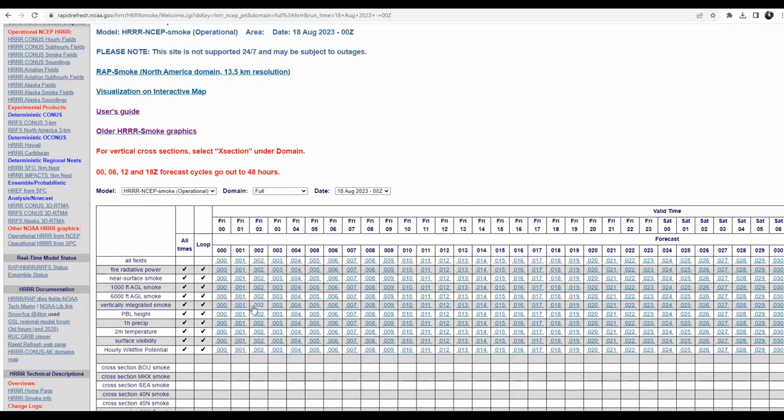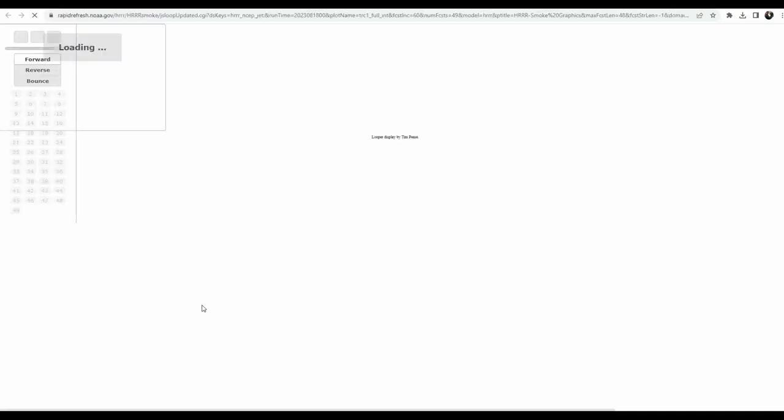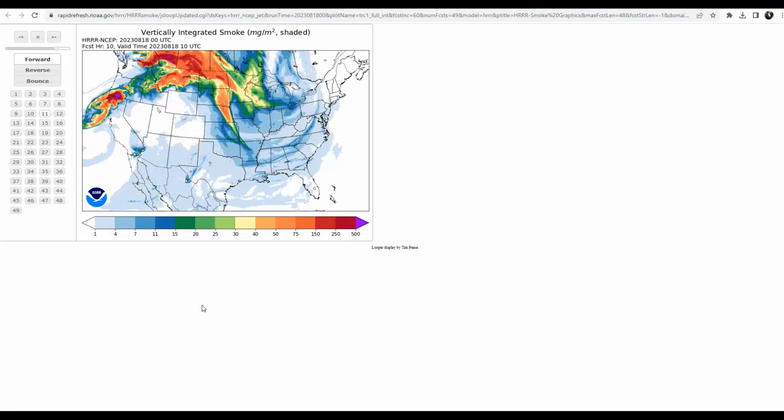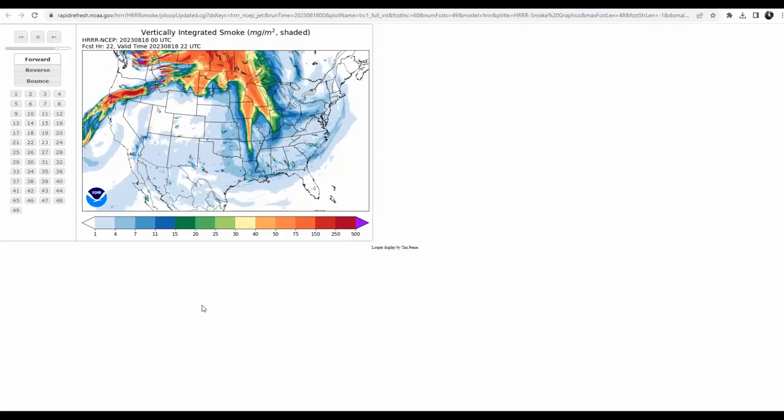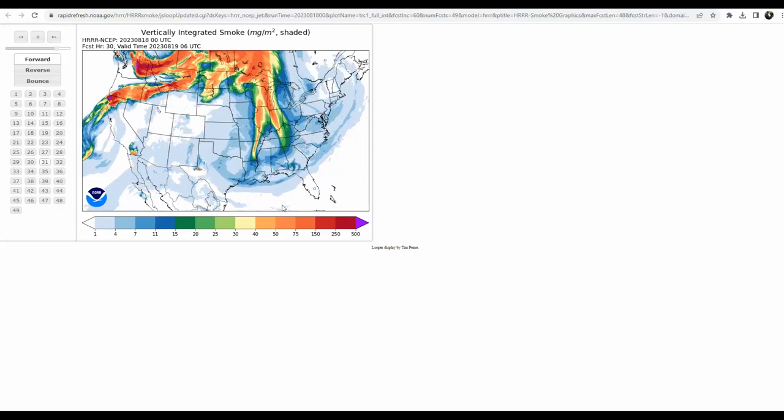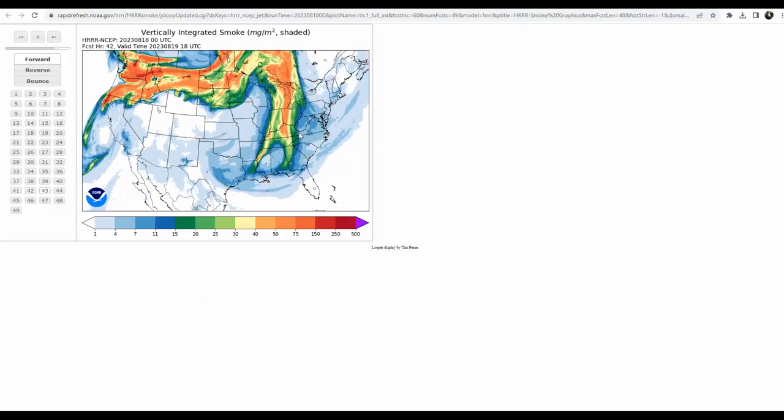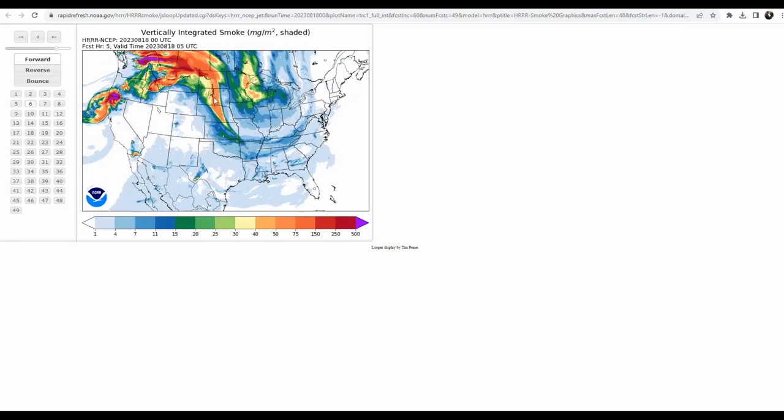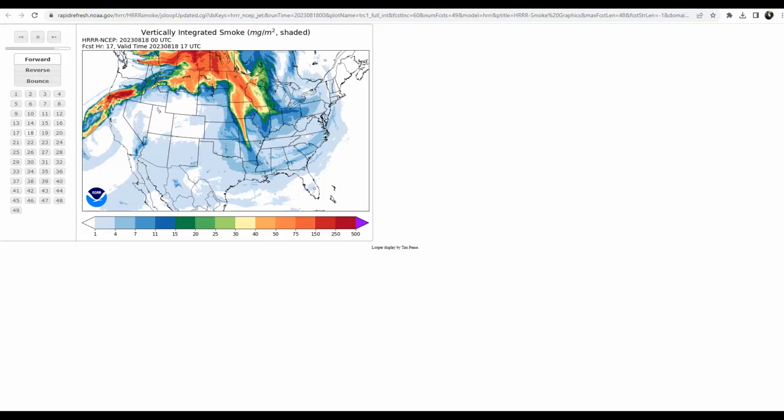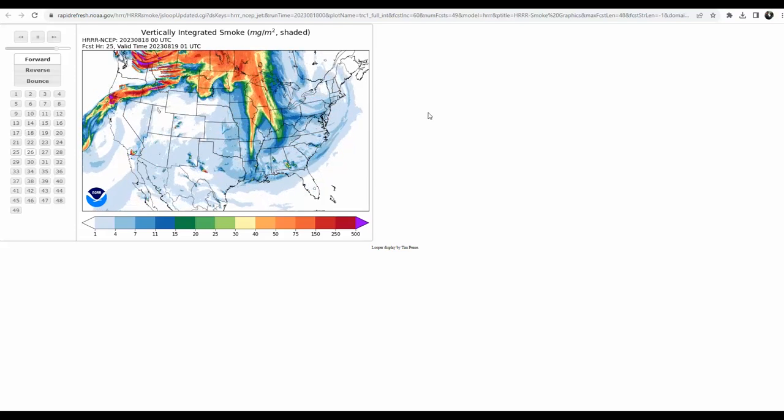Now if I want to see the vertically integrated smoke, I go here under loop and just click on the check mark that's for vertically integrated smoke. You wait for a while and then it's processing all that data while you wait, and then you end up with this loop that's showing the dispersion of the smoke throughout continental USA and up into the lower southern parts of the provinces in Canada.